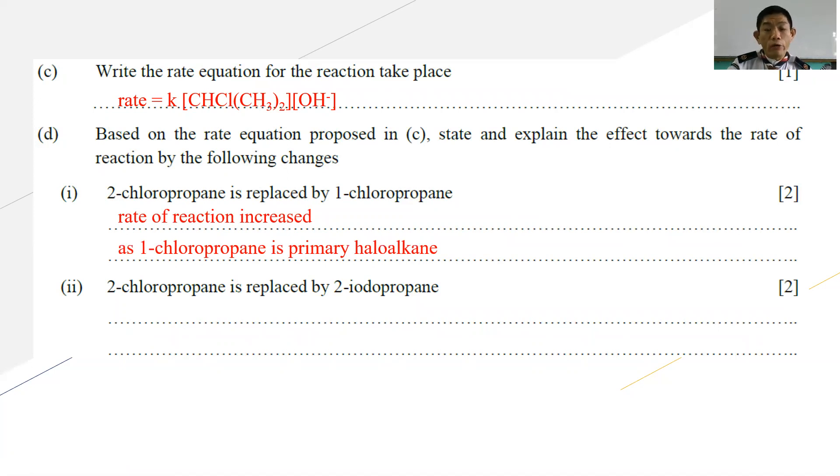What about if 2-chloropropane is replaced by 2-iodopropane? When you replace chlorine with iodine with a larger size, the rate of reaction will increase. Why? If you have a larger atomic radius, then you have a longer bond length. Longer bond length means you have weaker bond strength. When you have weaker bond strength, the C-I bond is broken easier compared to C-Cl bond, hence increasing the rate of reaction. You just say that C-I bond length is greater than C-Cl, or you can also answer as C-I bond strength is weaker than C-Cl.